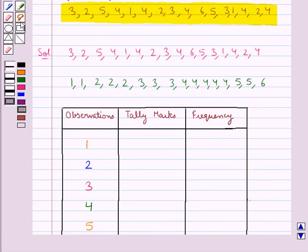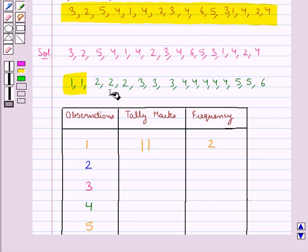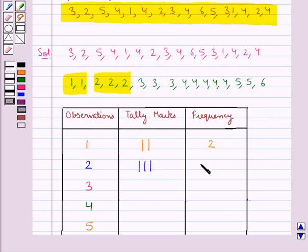Now in the given data, we see that 1 occurs 2 times. So we will put 2 tally marks and as 1 occurs 2 times, its frequency would be 2. Now consider the observation 2. It occurs 3 times as given in the data. So we will put 3 tally marks and so its frequency would be 3.